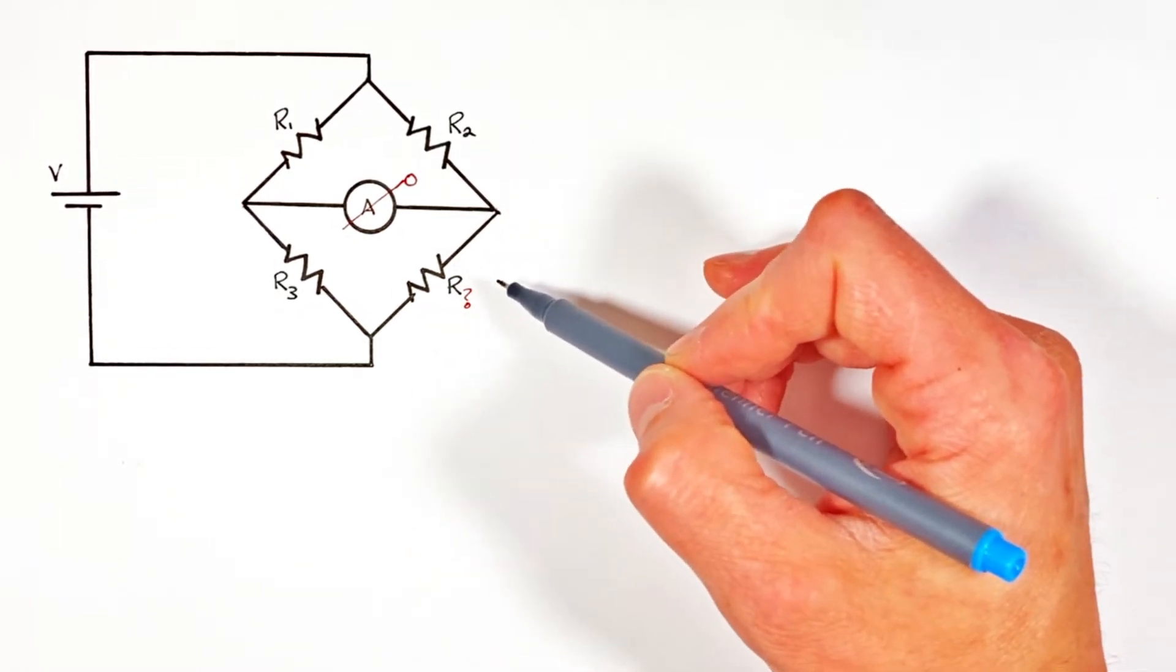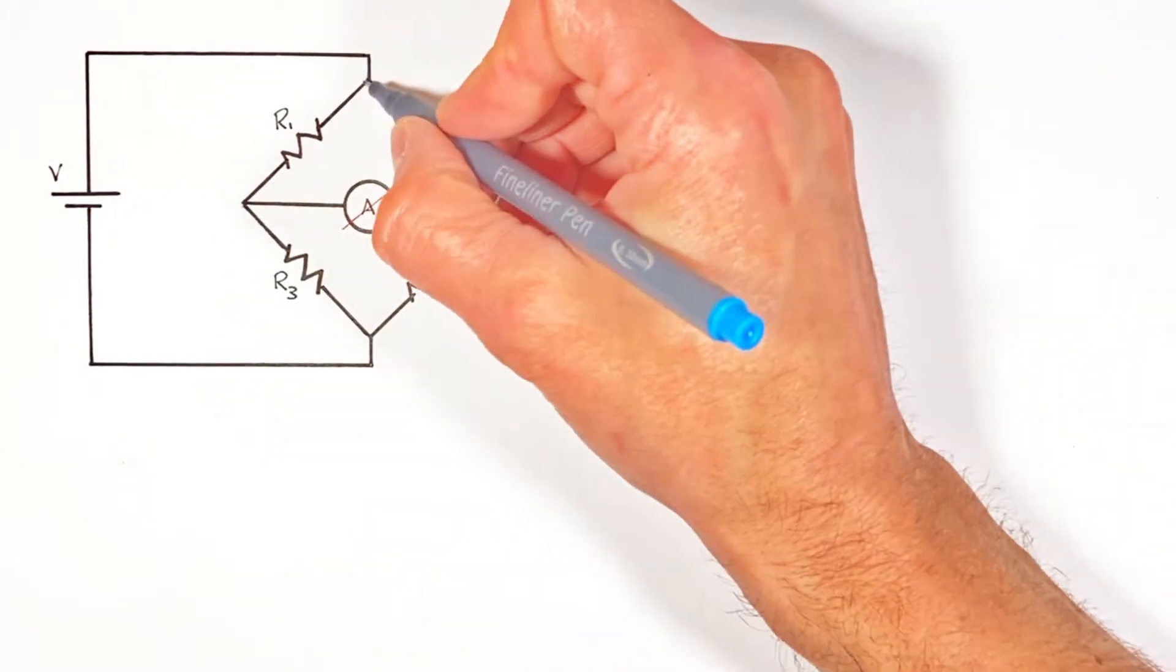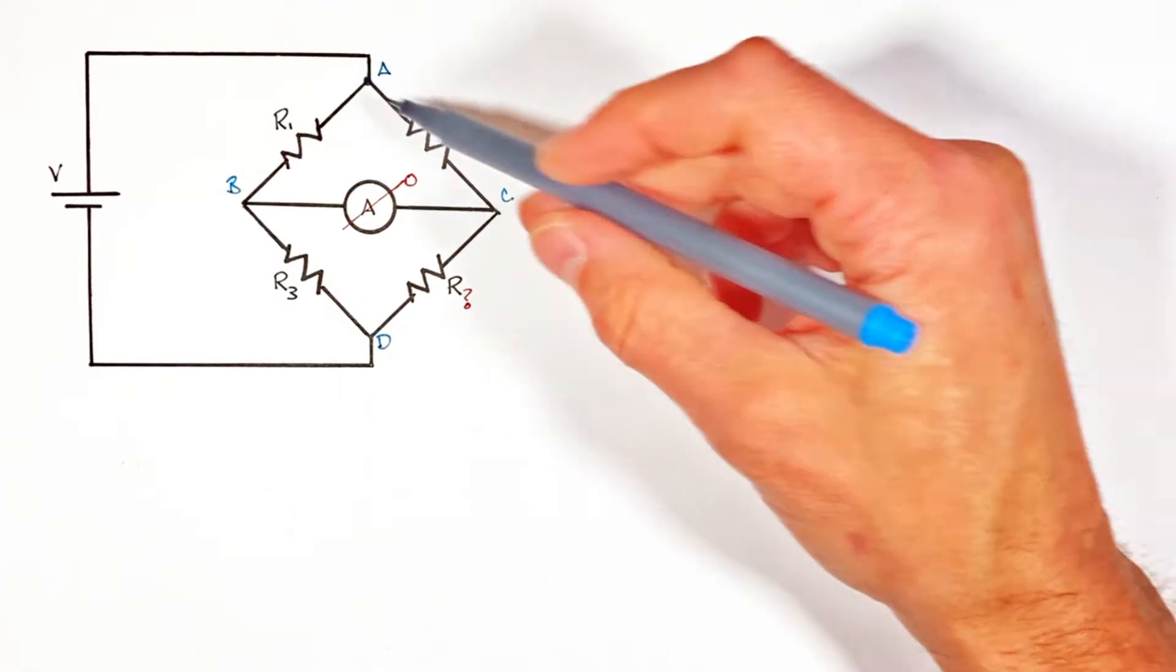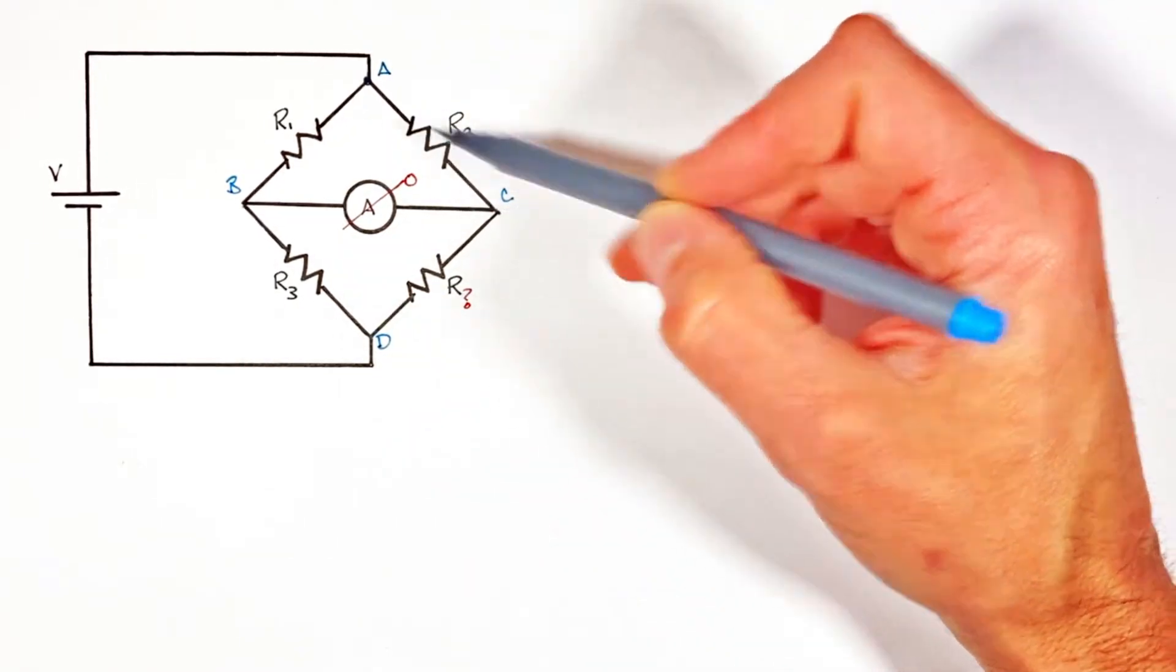Now to start, what I want to do is go through and label these corners. Each of these four points is at a different position around the Wheatstone bridge and they're also at different potentials.